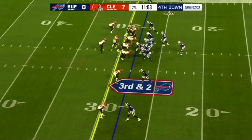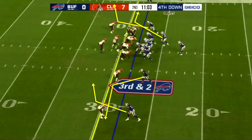Josh Allen's going to work the two man route combination to the top of the screen. Andre Holmes, who is in a tight alignment, is going to run a speed out to the boundary. Kroom is going to do a similar route but just shorter versus this man coverage. To the bottom of the screen, Benjamin is going to work to the middle of the field, almost like a slant flat combination. But Allen doesn't want to target the wide side of the field — he wants to work the boundary. He has trust in his arm that he can get it there regardless of the coverage, whether this was man or zone. He can get it to his receiver in a tight window in a hurry.